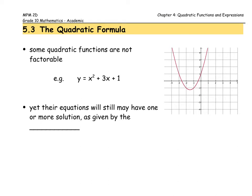Let's think about the strategies we've used so far in order to solve by using factoring. To factor this polynomial, I would be looking for two numbers that will multiply to give me 1 and add to give me 3. I can tell right off the bat that I am not going to be able to factor this.